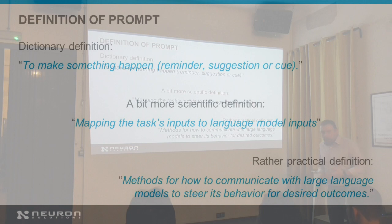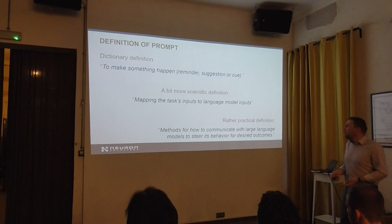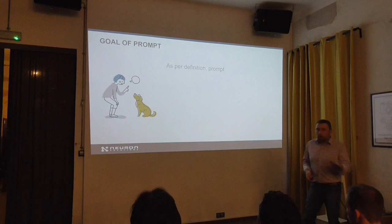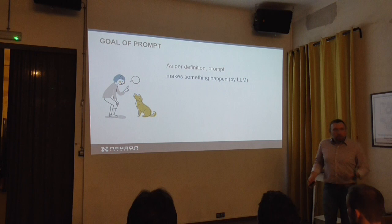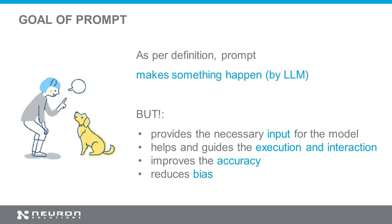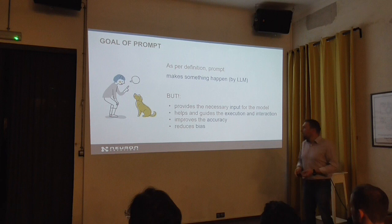But sometimes it's not easy to get the right answer. Okay, what is the goal? Make something happen. But to make something happen we provide some input, because we don't just want something to happen and not care what happens — we really want something special or predefined to happen. For that we give input into the prompt. We also help or guide or steer the execution of the task, and in the case of ChatGPT the interaction as well. We try to provide accuracy by narrowing down the space in which the model gives the answer, and of course we try to reduce the bias — to minimize that with the prompt.